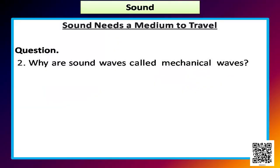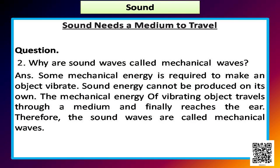Sound is produced because of the vibration of the bell, creating a disturbance that travels through the medium — air — through compression and rarefaction, and it reaches our ears. Question 2: Why are sound waves called mechanical waves? The answer is: some mechanical energy is required to make an object vibrate. Sound energy cannot be produced on its own. The mechanical energy of the vibrating object travels through a medium and finally reaches the ear. Therefore, sound waves are called mechanical waves.